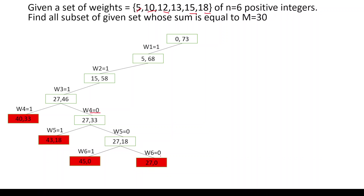Now what should be done? Because all elements are exhausted, we should backtrack. We have checked both conditions for w6, both conditions for w5, and both conditions for w4. Looking at w3, we took the condition where we add w3, but we have not taken the condition where we don't add w3.